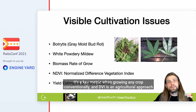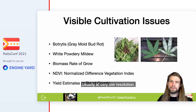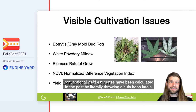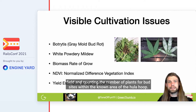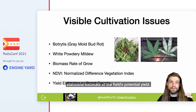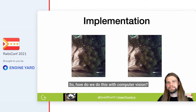We also have the challenge of tracking biomass rate of growth — a key metric when growing any crop. Conventionally, NDVI is an agricultural approach to computer vision used to calculate plant health, usually at very low resolution, more recently with drone flights or stationary cameras indoors. Conventional yield estimates have been calculated in the past by literally throwing a hula hoop into a field and counting the number of plants or bud sites within the known area of the hula hoop. The agronomist can then extrapolate the yield potential for a rough statistical estimate of the field's potential yield.